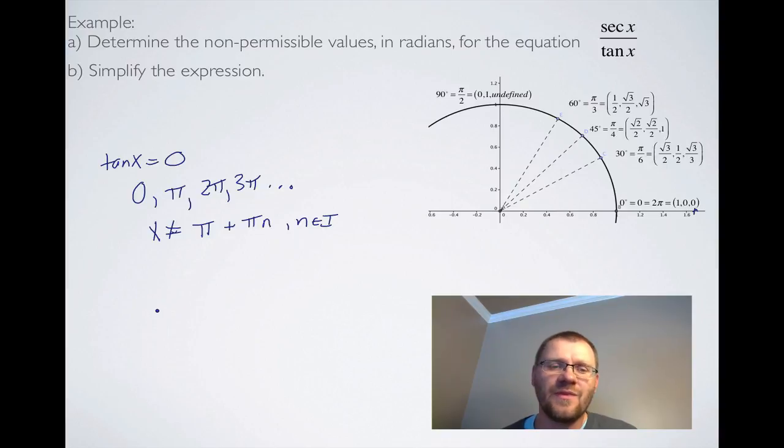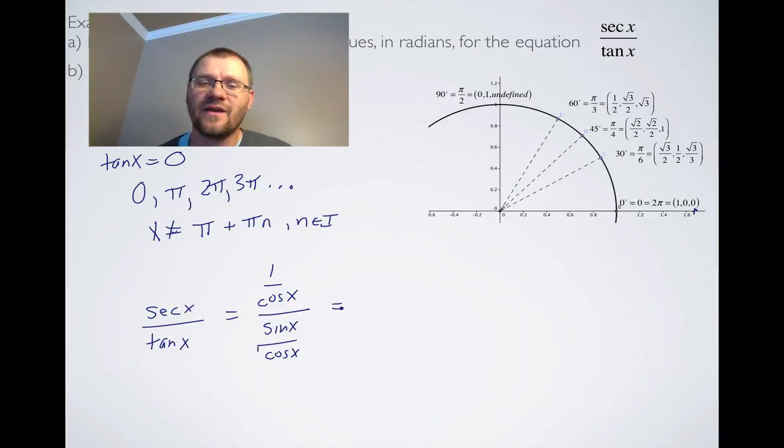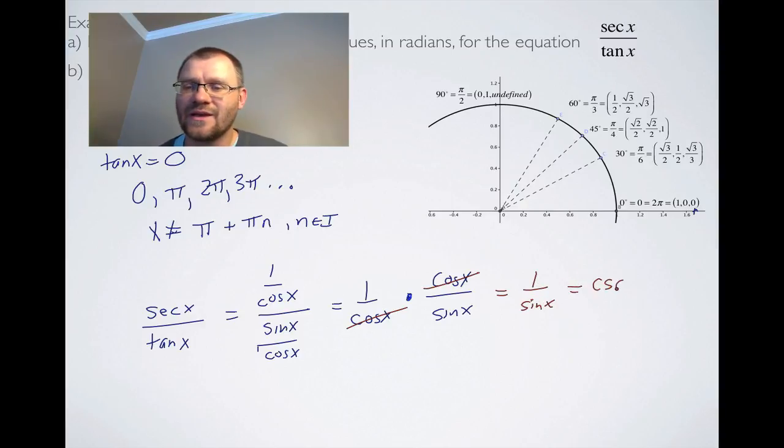Now we need to simplify the expression. It may look like it's a simple expression already, but it's not. We can simplify by making a substitution for both these things. Secant x, we know, is 1 over cos x, and tan x is sine over cos x. This doesn't look like it's simpler, but we do know that when we divide a fraction by a fraction, we take the second fraction and we flip it and turn it into a multiplying question. We flip the second fraction and it's now cos x over sine x. We can see that the cos x's cancel out. We get 1 over sine x. And to finish this off, we would then call that cosecant x. We've simplified this fraction into a different identity, and by doing that we use a reciprocal identity and then a quotient identity.